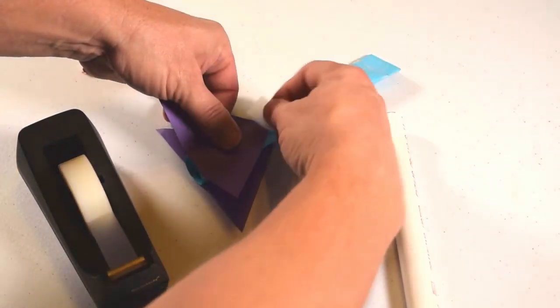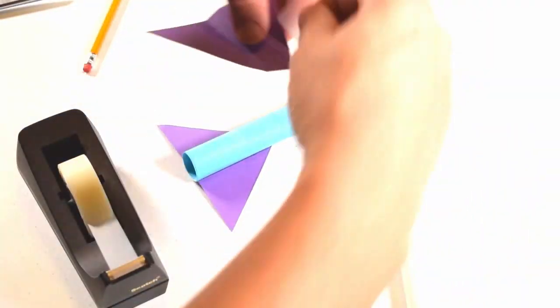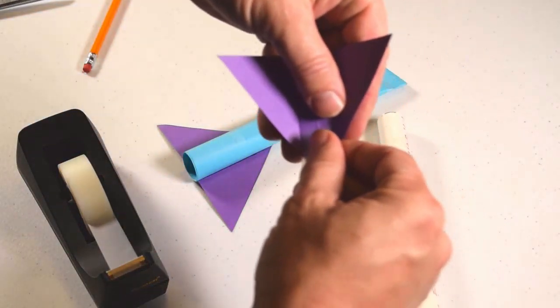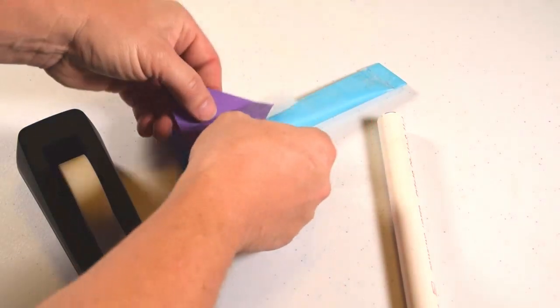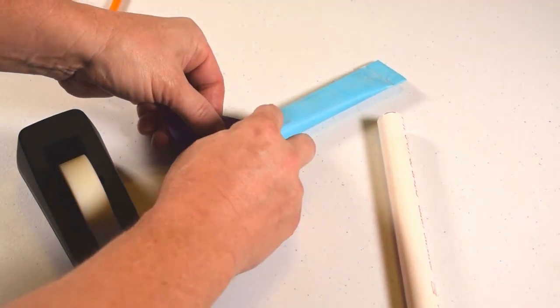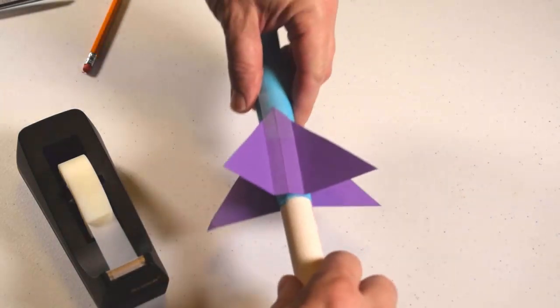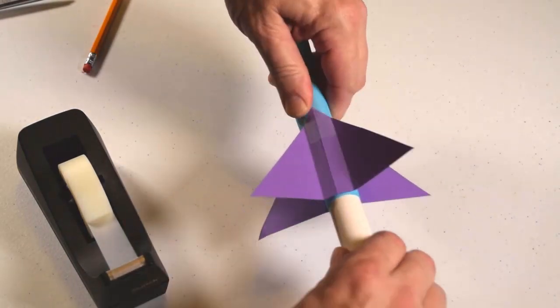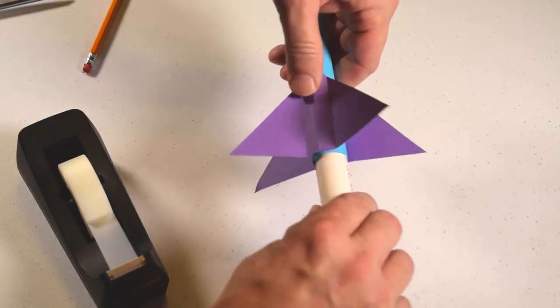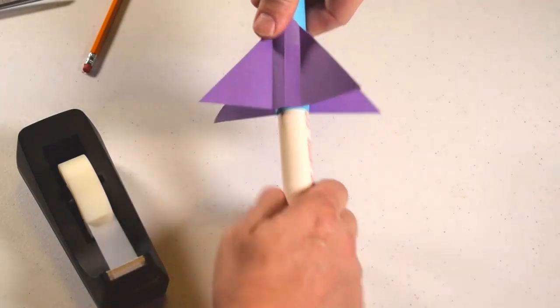Sometimes it's easier if you just press the tape onto the fin and then put the fin on the rocket, like that. And that's not very tight, right? So I'm going to slide this in and press it hard. Still need to do the bottom part.